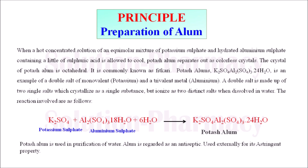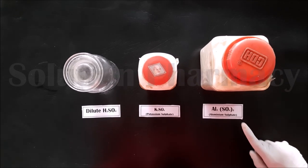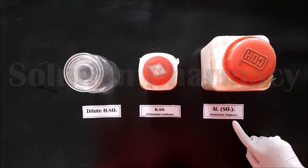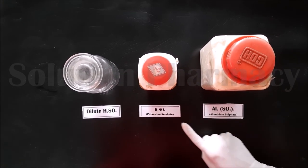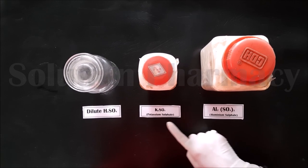Astringent property means alum has a protein-precipitating property — it is applied to stop bleeding in the case of minor cuts, meaning alum has hemostatic property. Now let's look at the ingredients required for the preparation of potash alum. The first ingredient is aluminum sulfate and the next is potassium sulfate.